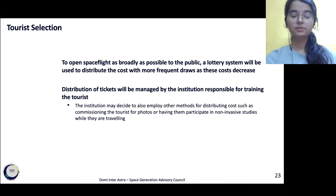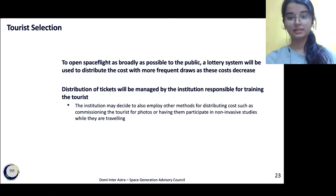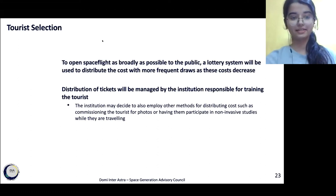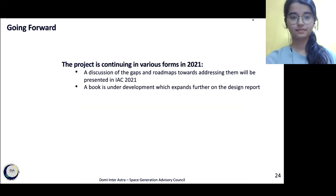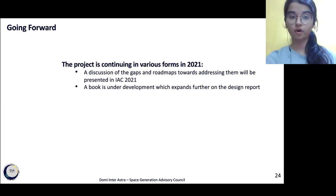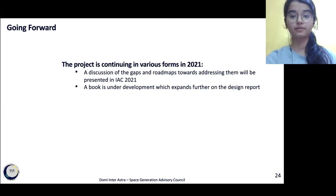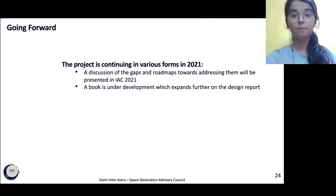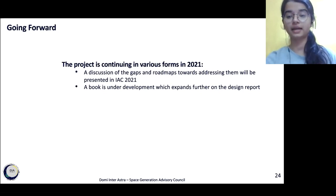The tourist selection will be managed by the institution for training the tourists. To make it as accessible as possible, a lottery system will be used to distribute the costs, with more frequent draws as these costs decrease. We hope to make this base a reality. Going forward, our project is continuing in various forms from individuals all across the world. A discussion of the gaps and roadmaps towards addressing them will be presented at the International Astronautical Congress in 2021. Currently, a book is under development that expands further on the design report to look at space exploration through STEAM lenses.